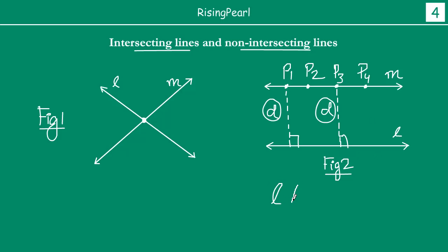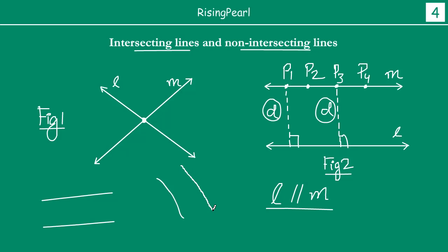Line L is parallel to line M — we draw two small lines like this to indicate parallel. They will never meet. As long as this distance remains constant, these lines will never meet, and then we call them parallel lines.